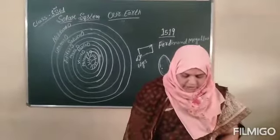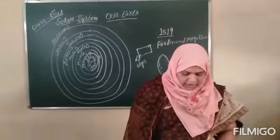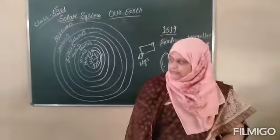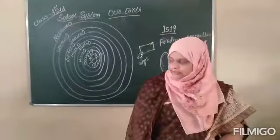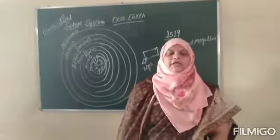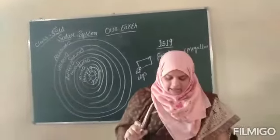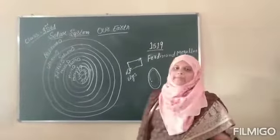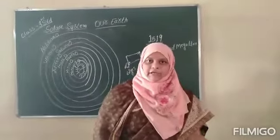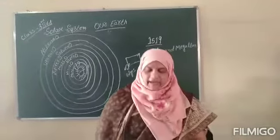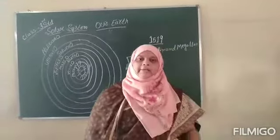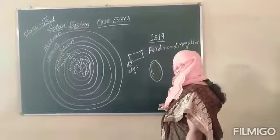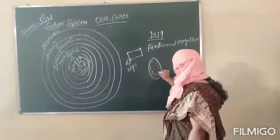In 1590, a Portuguese scholar, Ferdinand Magellan, started his long voyage — a sea journey — from Spain. Portuguese means a European person. Ferdinand Magellan started his journey from Spain by water journey. He kept sailing in one direction, from here, one direction he kept going.